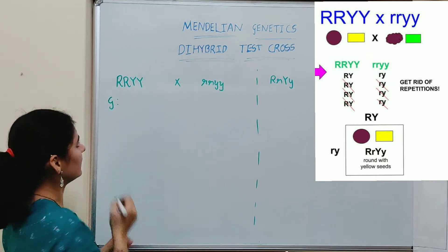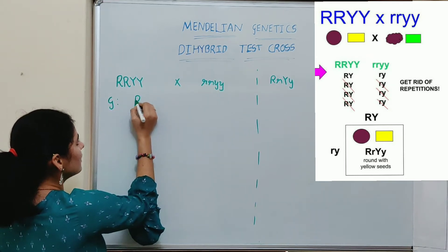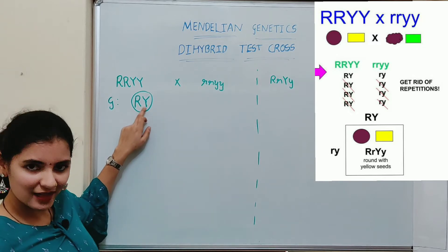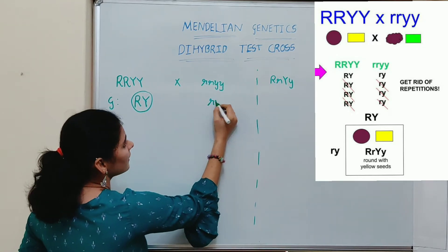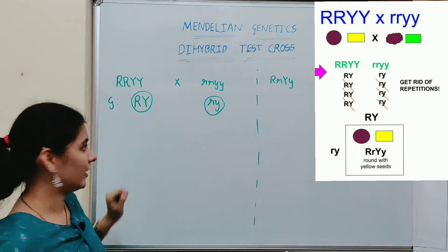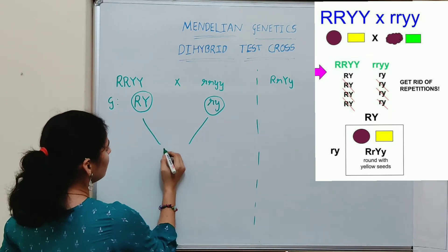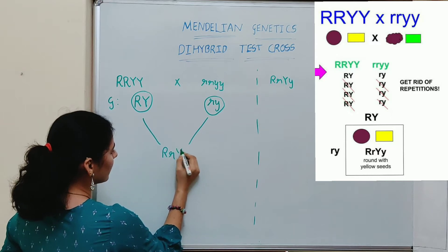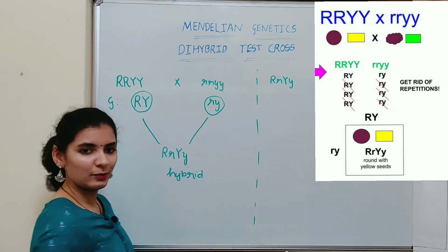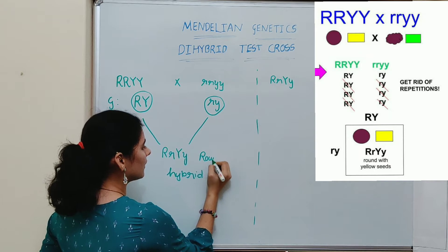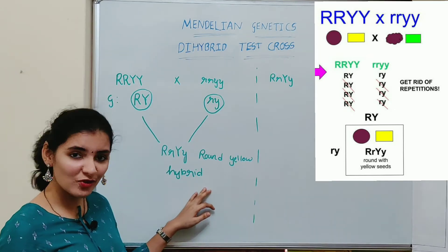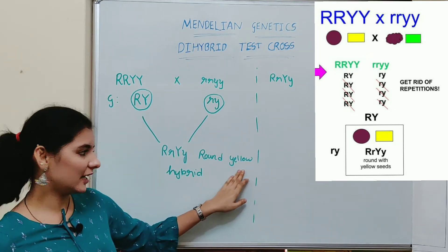The next step is writing the gametes. The homozygous dominant plant (RRYY) can produce only one type of gamete: RY. All gametes will have the factor RY. The double recessive plant can produce only one type of gamete: ry. So when you make a cross between these two plants, you will get a hybrid plant with genotype RrYy, which produces round and yellow seeds. In the first possibility, all plants will produce round and yellow seeds.